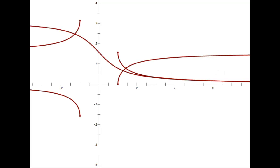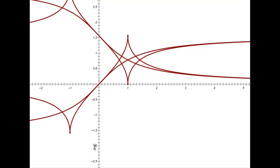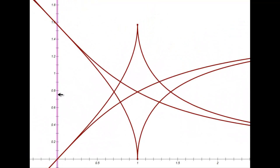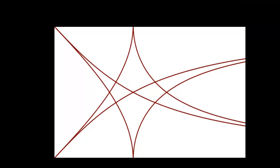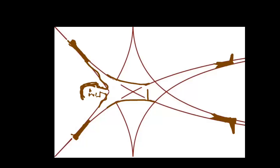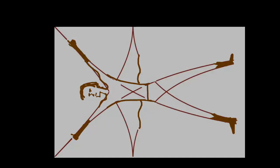So those are the six inverse trig functions. If you graph them all together at the same time, you get a pretty-looking picture. And those are all six inverse trig graphs.